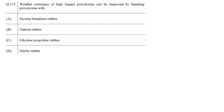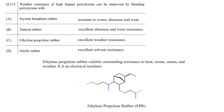Which polymer is blended with polystyrene to improve its weather resistance? Polystyrene is an amorphous material with low impact strength. To increase its impact strength, it is blended with rubbers. But here we need to identify a rubber which also provides weather resistance. Among the given options, ethylene propylene rubber exhibits outstanding resistance to heat, ozone, steam, and weather, and is used for outdoor applications. So the correct answer is C. Silicon rubber is also an excellent weather resistant rubber.